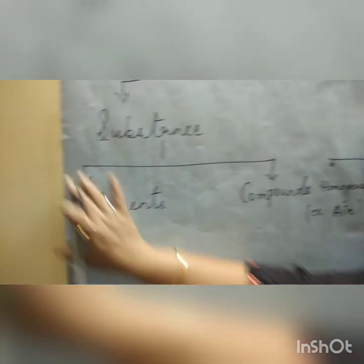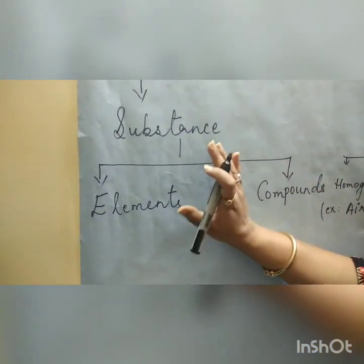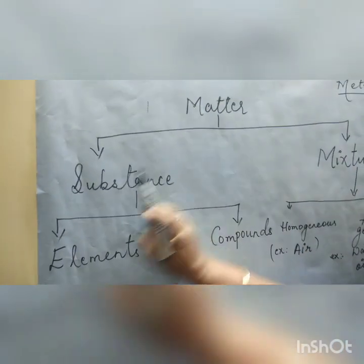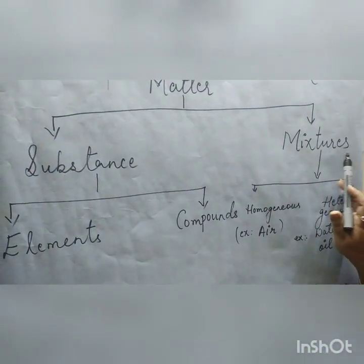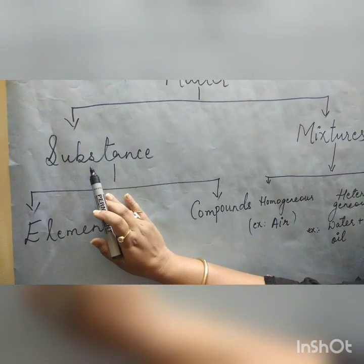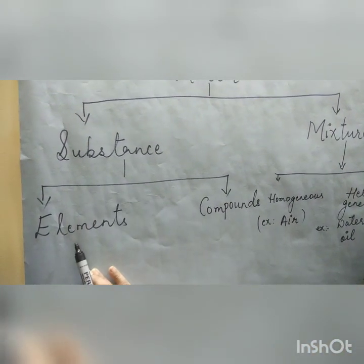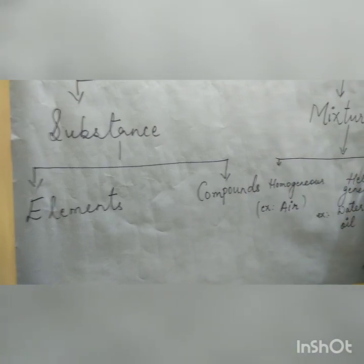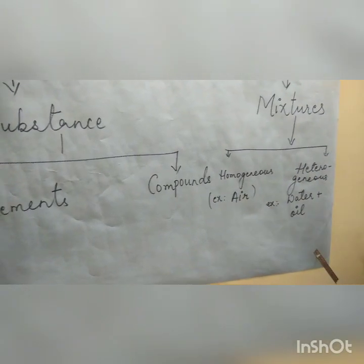Let me recall: how many kinds of matter are there? Substances and mixtures. How many kinds of substances are there? Elements and compounds. How many types of mixtures are there? Homogeneous and heterogeneous.